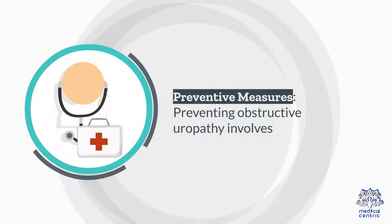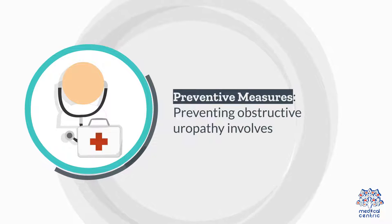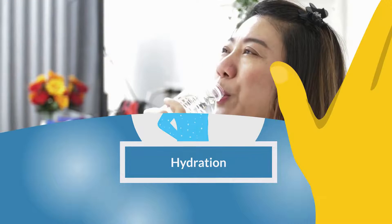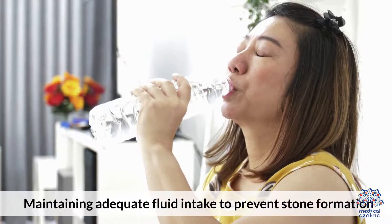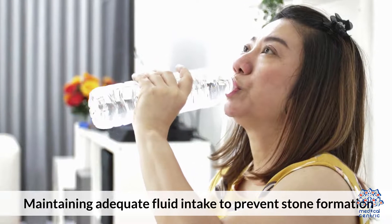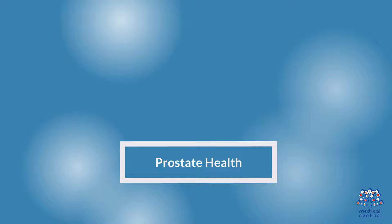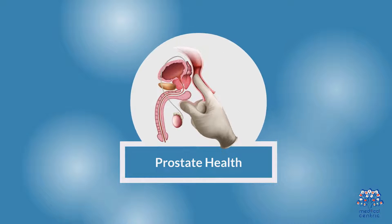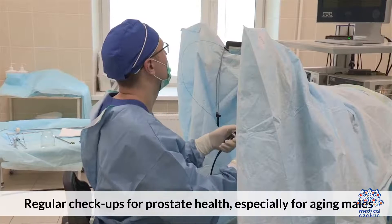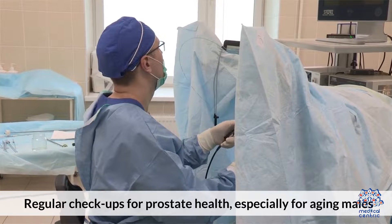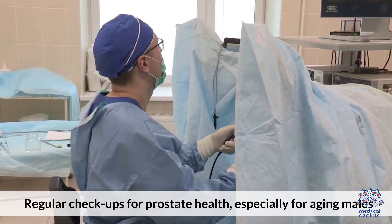Preventative Measures: Preventing obstructive uropathy involves maintaining adequate hydration to prevent stone formation, and regular checkups for prostate health, especially for aging males.